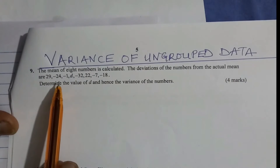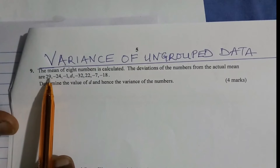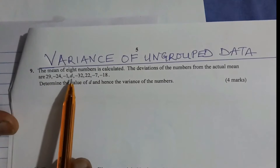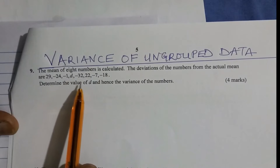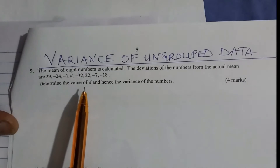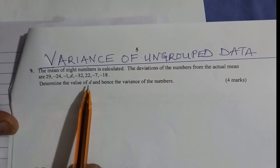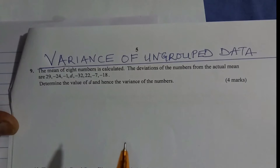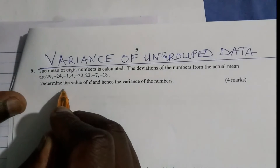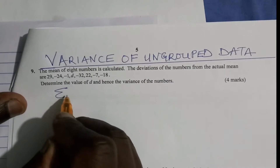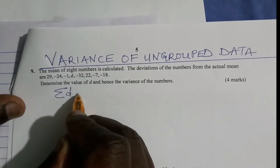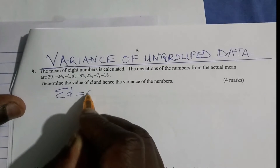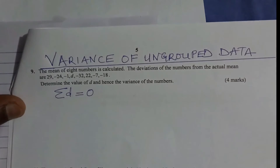We're given the deviations from the actual mean as these numbers and we have an unknown value which is D. We need to get that D. One important thing that is going to help us is the fact that the sum of the deviations from the actual mean should give us a sum of zero. That is what is going to help us in this question.